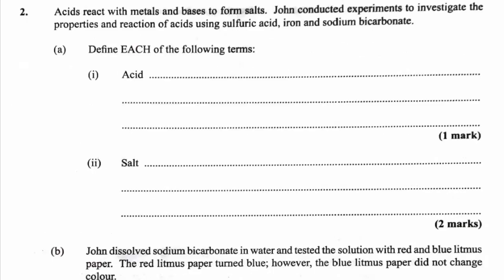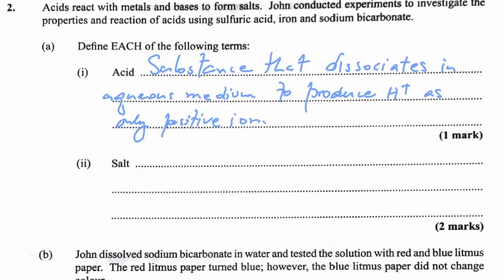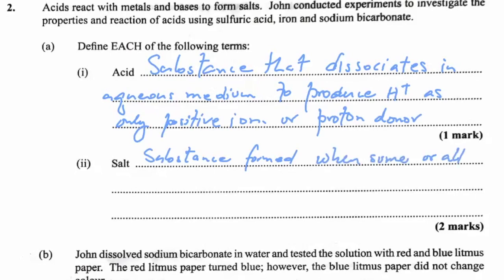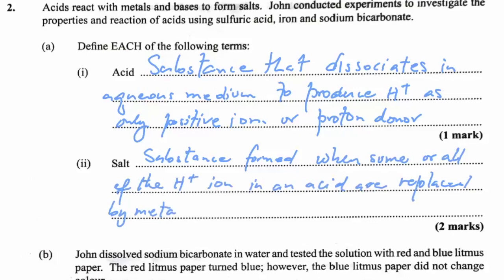Question 2: Define each of the following. An acid is a substance that dissociates in aqueous medium to produce H⁺ ions, or we could say it is a proton donor. A salt is a substance formed when some or all of the H⁺ ions in an acid are replaced by a metal ion or the ammonium ion.